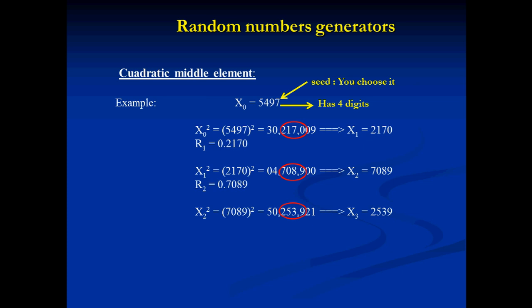In order to have random numbers we need random generators. The first one we are going to see is the Middle Square Method (Quadratic Middle Element). For this method we need a seed — a number of four or more digits. In this case I choose the number 5497. We square this number and then obtain the four middle digits of the resulting quantity.